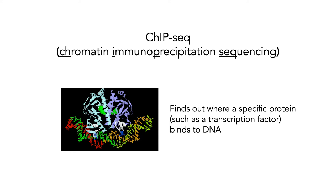The first case study is ChIP-seq, which is shorthand for chromatin immunoprecipitation sequencing. This is a technology that allows you to figure out where a specific protein, such as a transcription factor, binds to DNA. This is a common task, especially in biological studies where you're trying to figure out what particular proteins do.